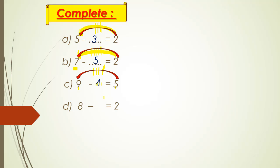Another exercise: eight minus what equals two. Any missing number I will make minus — except before and minus, I will make plus. I'll count after the smallest to reach the greatest: after two — three, four, five, six, seven, eight.